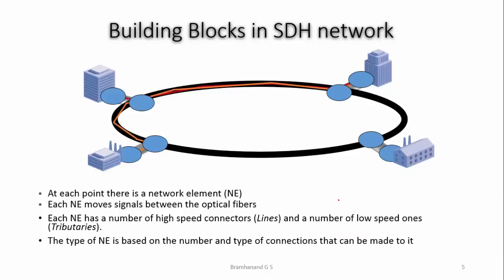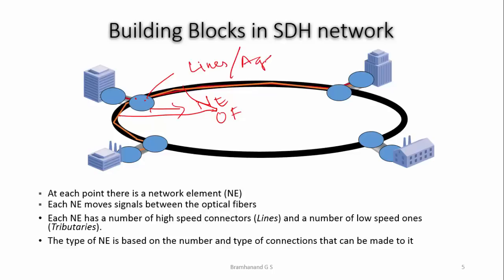The main building block of the SDH network is the network element itself. A network element is a piece of hardware which moves signals between optical fibers. It has high-speed connectors called lines or aggregates, and low-speed connector lines called tributaries.